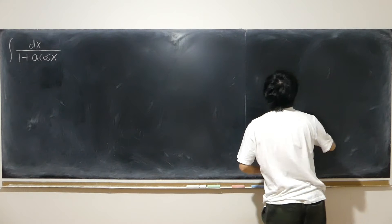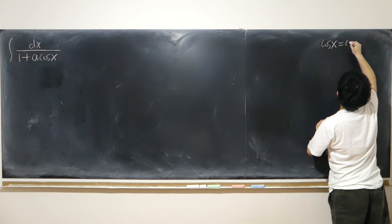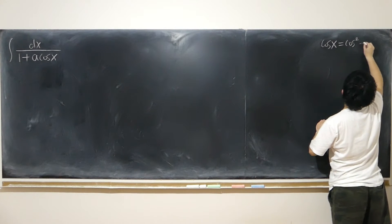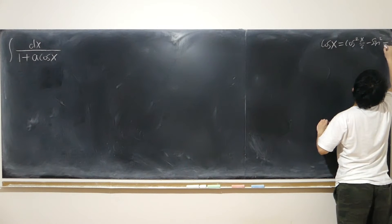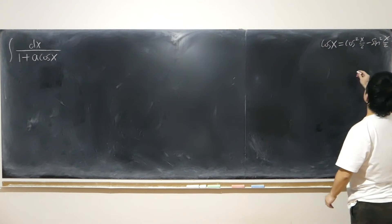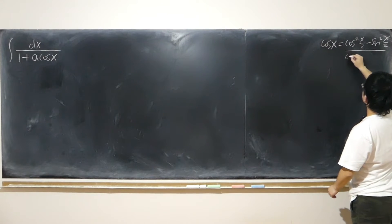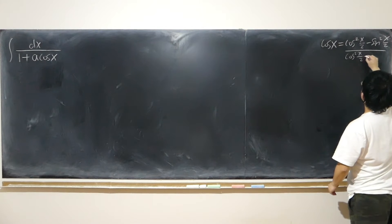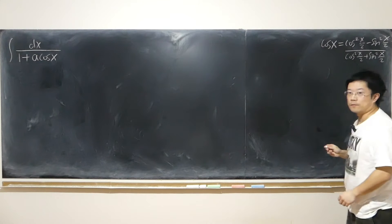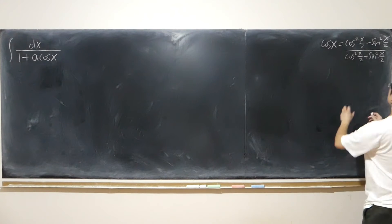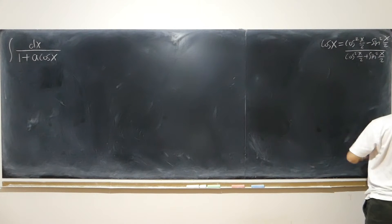Perhaps I can use cosine x equal to cosine squared (x/2) minus sine squared (x/2). But this is also equal to over 1, and 1 is equal to cosine squared plus sine squared. So it's the same thing. Here we can just easily divide both the top and bottom by cosine squared (x/2).